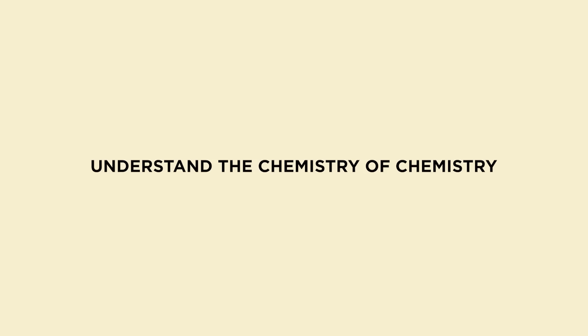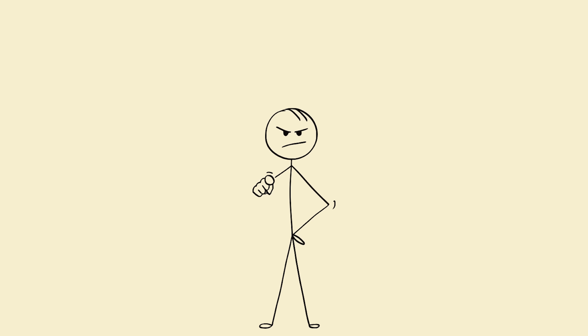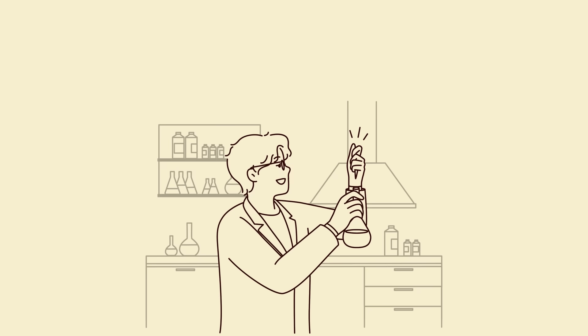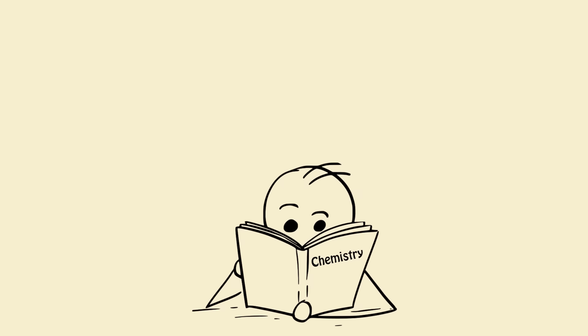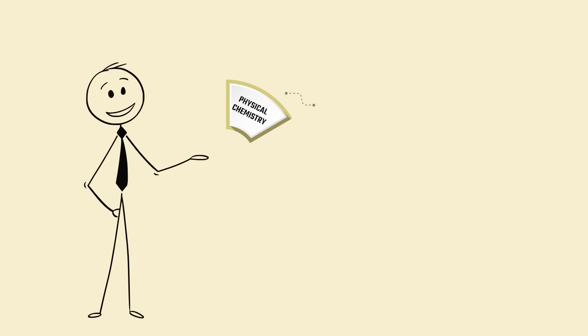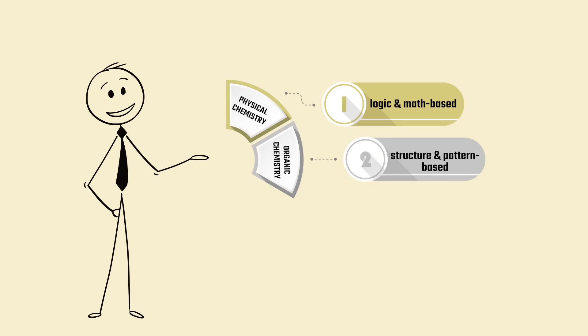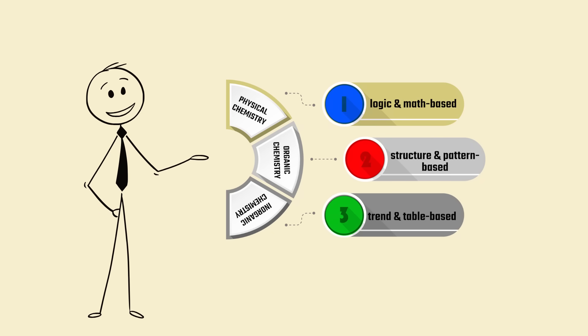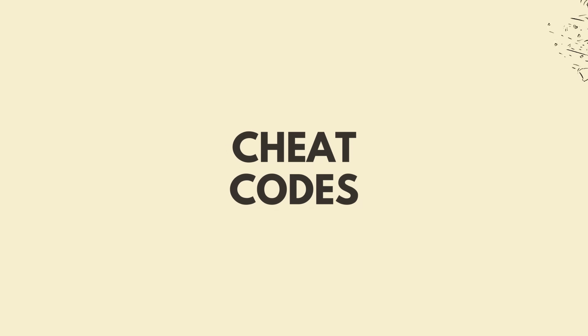Understand the chemistry of chemistry. Before you touch a single chapter, you need to stop thinking like a student and start thinking like a scientist. Chemistry is not about memorizing, it's about patterns, reactions, and systems. Break it into physical chemistry equals logic and math-based, organic chemistry equals structure and pattern-based, inorganic chemistry equals trend and table-based. Each part equals a different strategy. Let's dive into the cheat codes.